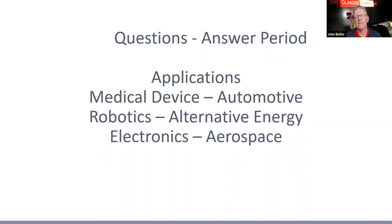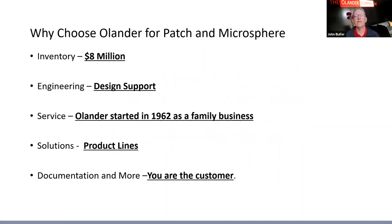So why choose Olander for your patch and microsphere threaded fasteners? Our inventory — we have over $8 million worth of inventory in our three different locations. We have hundreds of in-stock SKUs that already have a microsphere or nylon patch, whether it's a heavy patch, a light patch, or a standard patch. Going back to Philip Olander's idea: you have to have parts in stock in order to sell them. When you become an Olander customer, you're part of our family and we treat our family the way we want to be treated.